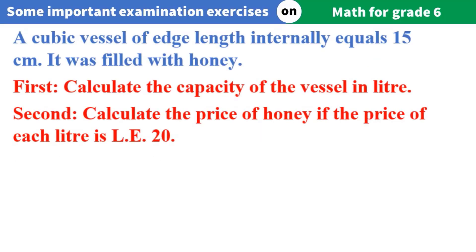A cubic vessel of edge length internally equals 15 centimeters. It was filled with honey. First, calculate the capacity of the vessel in litres. Second, calculate the price of honey if the price of each litre is 20 pounds.